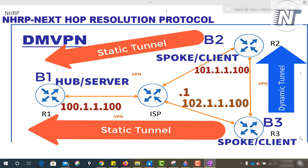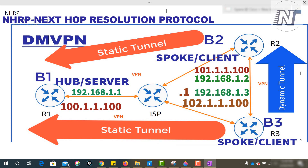For the tunnel IP addresses: for Branch 1 - let's say for Branch 2 it is 192.168.1.2, and for Branch 3 it will be 192.168.1.3.